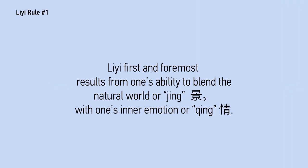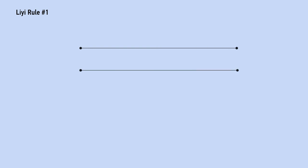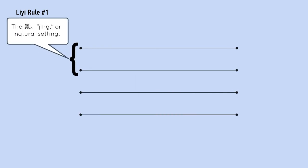Li Yi first and foremost results from one's ability to blend the natural world, or Jing, with one's inner emotion, or Qing. The first two lines introduce the Jing, or the natural setting.